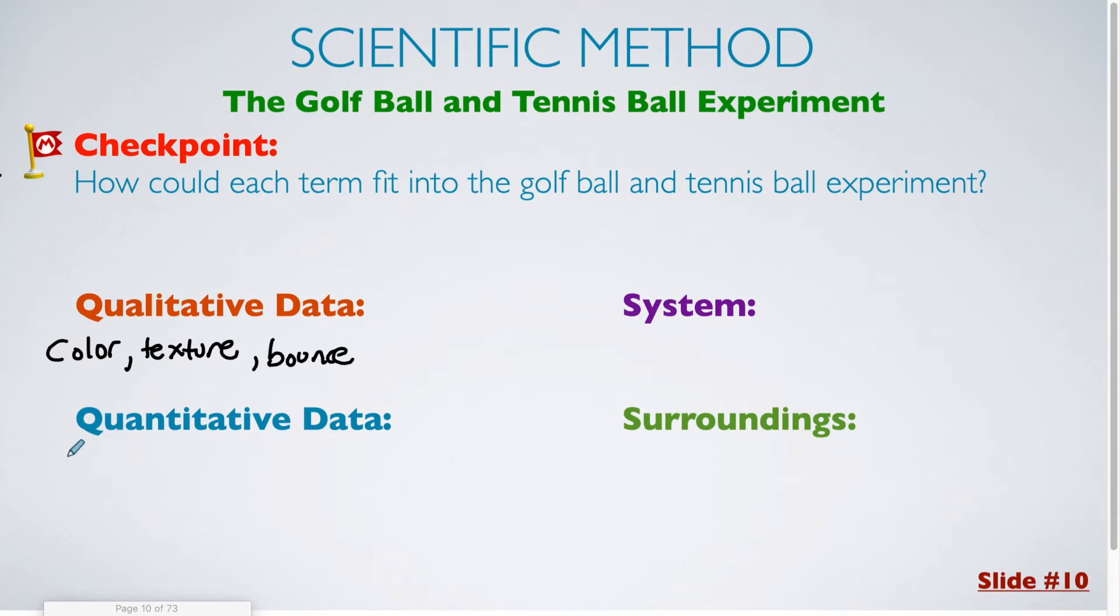For quantitative data, I could say the volume of water that was inside of the beaker that was used in the experiment. That is something that we could actually measure. The temperature of the water will be another example of quantitative data. We could use the size of the ball. We could also measure the height that the ball was within the water.